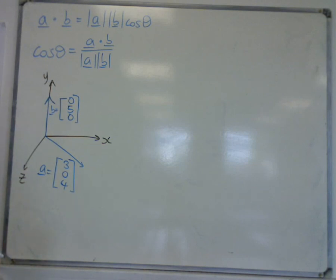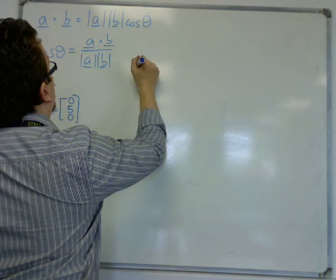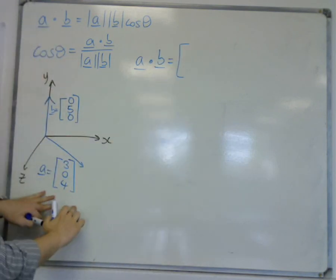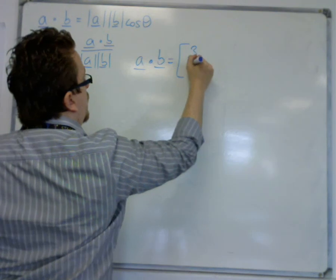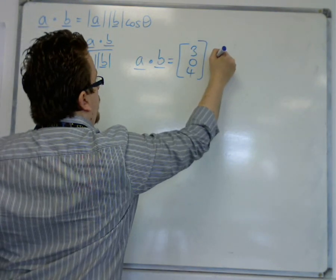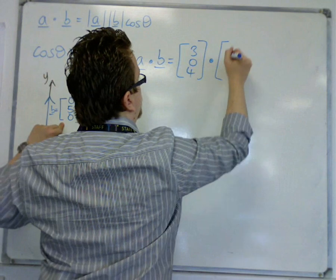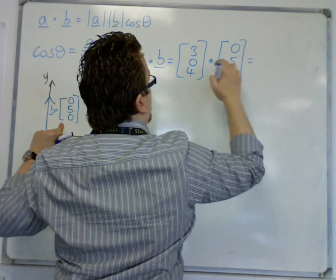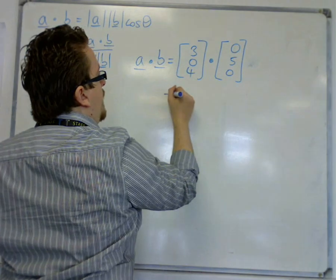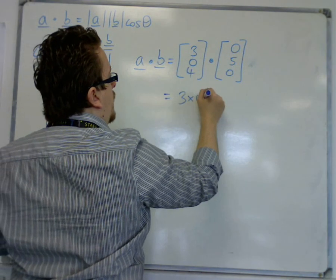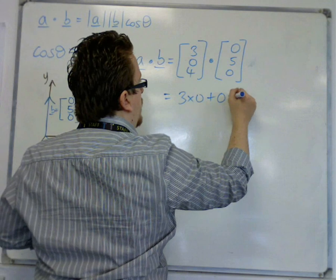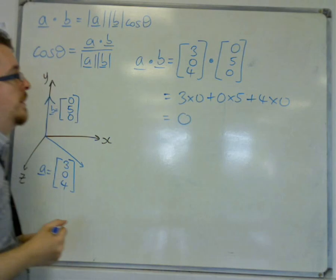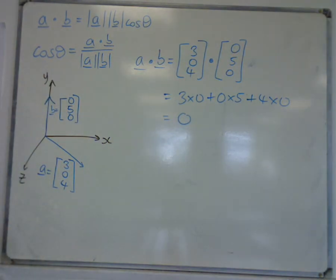Then what's going to happen is that if I do a dotted with b, this is 3, 0, 4 dotted with 0, 5, 0. So 3 times 0 plus 0 times 5 plus 4 times 0, which lo and behold is 0. So the dot product is 0.